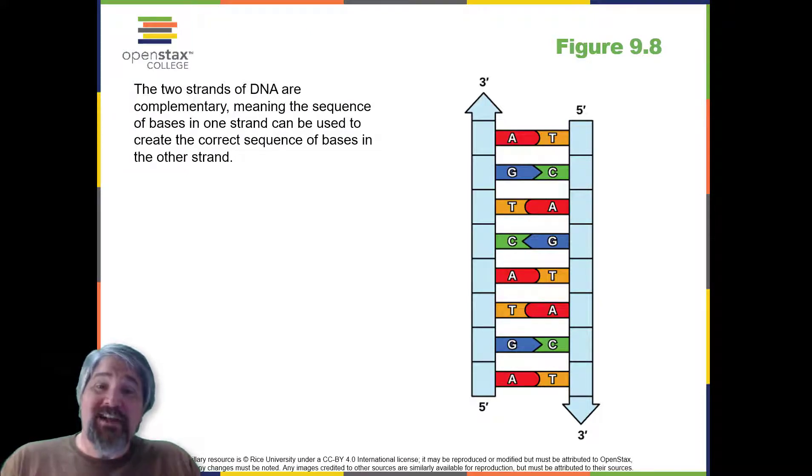For example, a strand of DNA with a nucleotide sequence of AGTCATGA will have a complementary strand with the sequence TCAGTACT, as depicted here. Because of the complementarity of the two strands, having one strand means that it is possible to recreate the other strand.